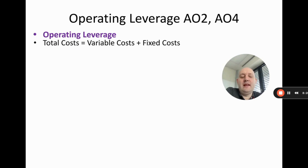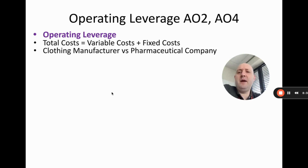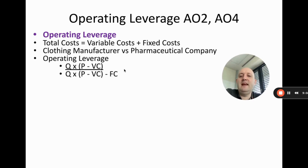Operating leverage is probably one of the most challenging calculations in the syllabus. We know total cost equals variable cost plus fixed cost. Operating leverage looks at the ratio of these two costs for a business. A pharmaceutical company typically has high fixed costs due to R&D and drug trials, whereas a clothing manufacturer has mostly variable costs. The formula is: (quantity sold × (price − variable cost per unit)) ÷ (quantity sold × (price − variable cost per unit) − fixed costs). The top and bottom are identical except the bottom subtracts fixed costs.